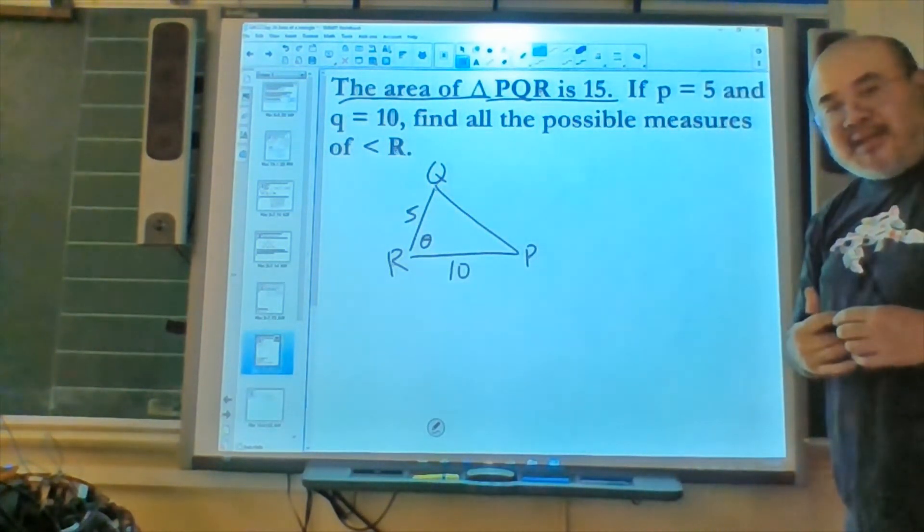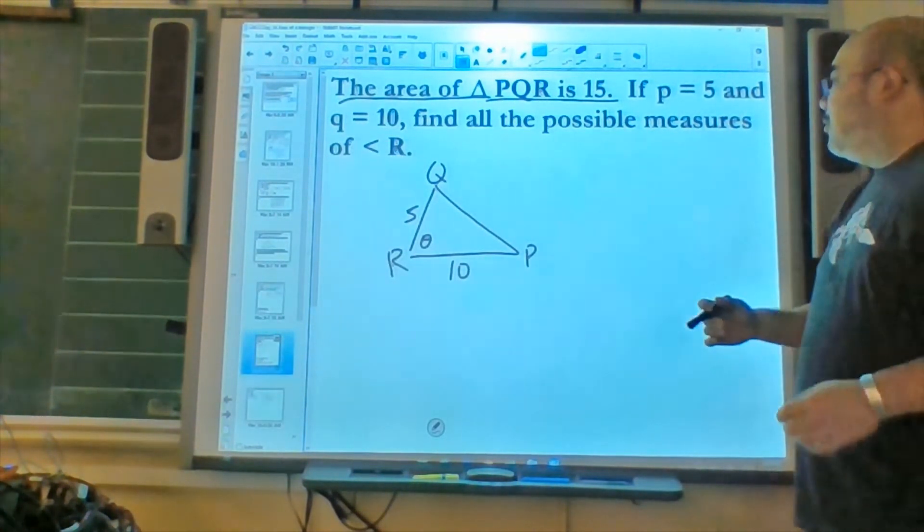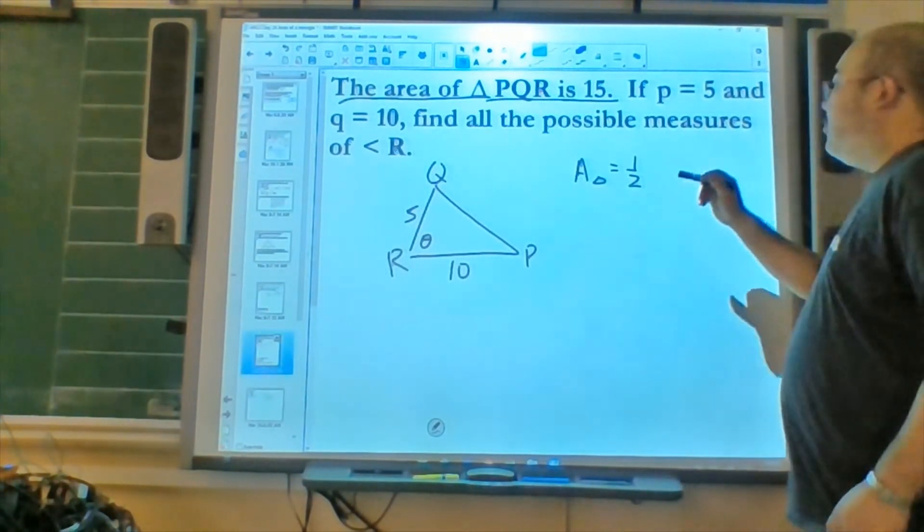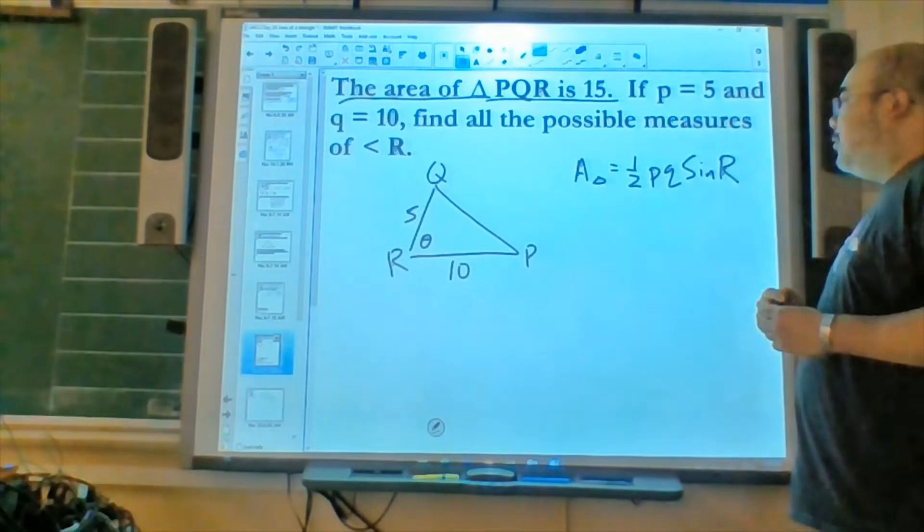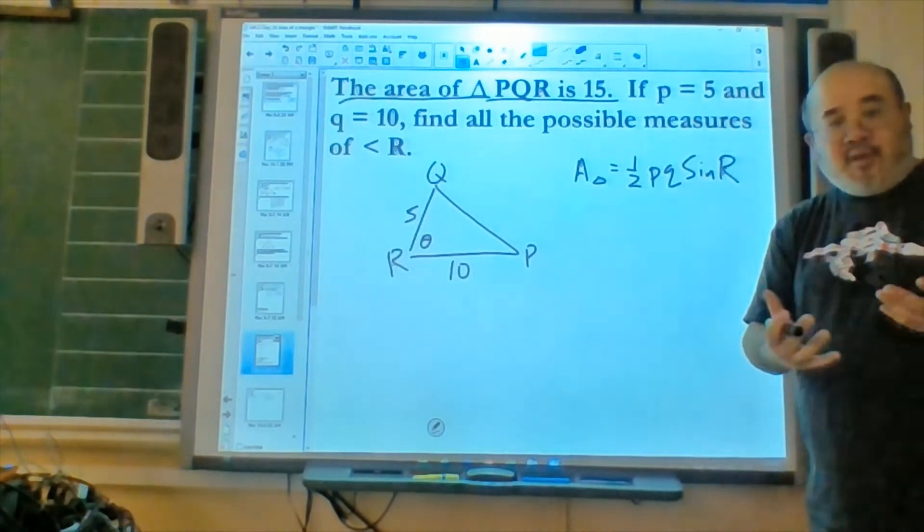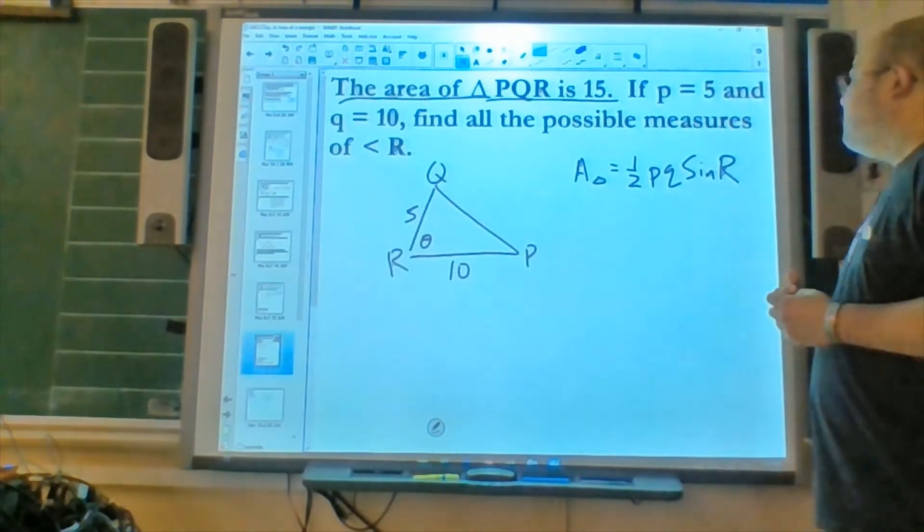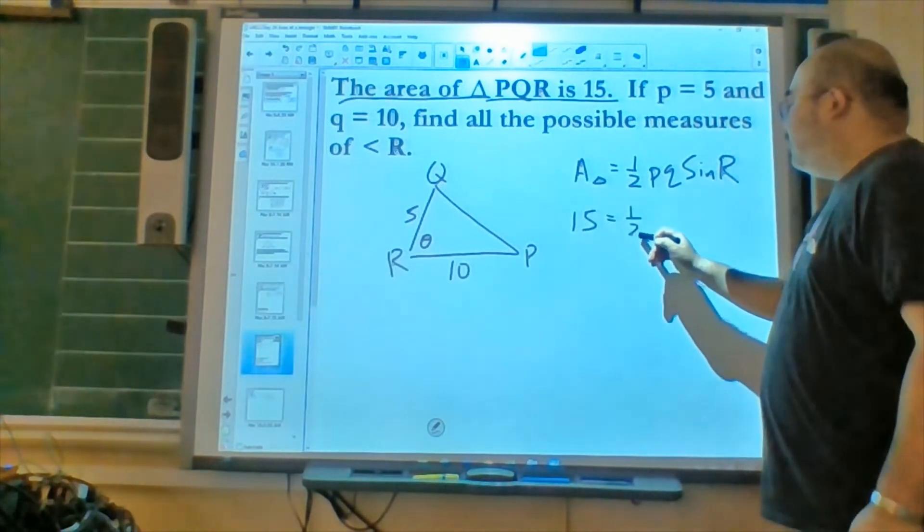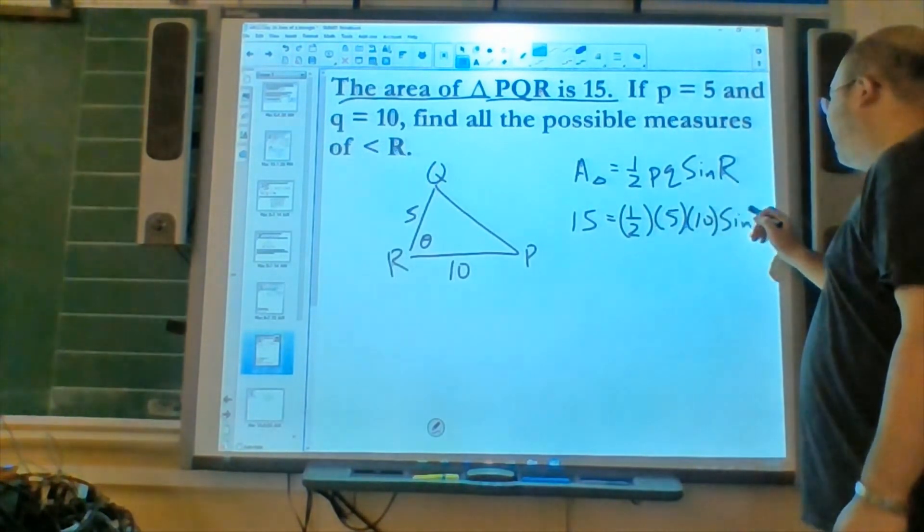So in this case, theta is that symbol we use to show the unknown value. Area of the triangle is equal to one half, it would be P times Q, sine of R. Notice that we have the two sides PQ and the angle R. We're using the letters P, Q, and R, it's just the two sides, the lowercase, and the angle we're trying to solve is the uppercase letter.